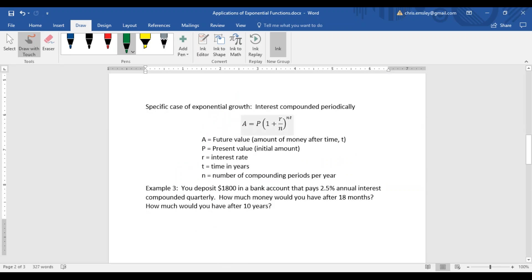Here's a special case of exponential growth. This is a specialized formula we use when we have interest that is compounded periodically. You'll notice similarities between this formula and the one we had before. This time, A - we called that A of t before - in economic terms they call that the future value. That's the amount of money you have after time t.